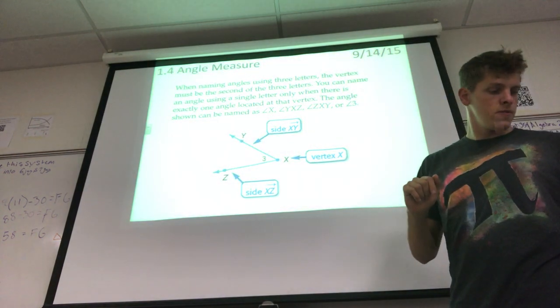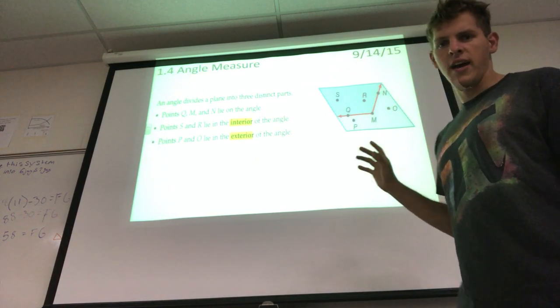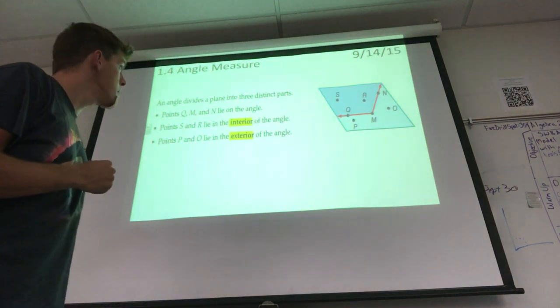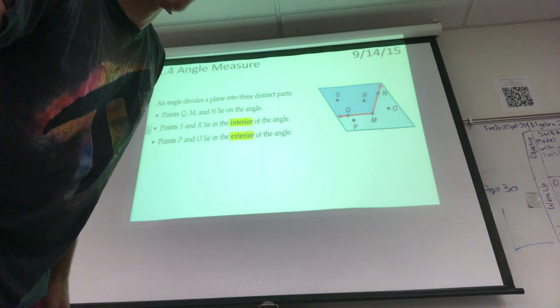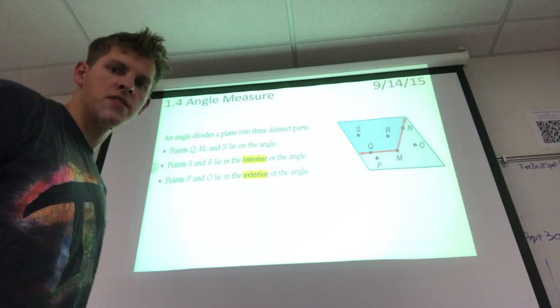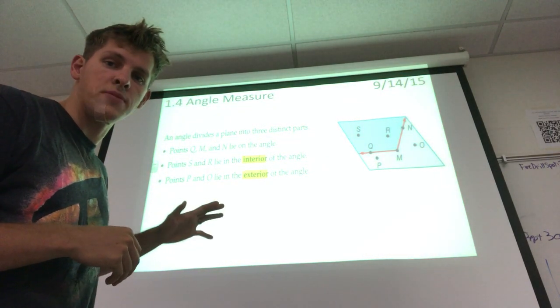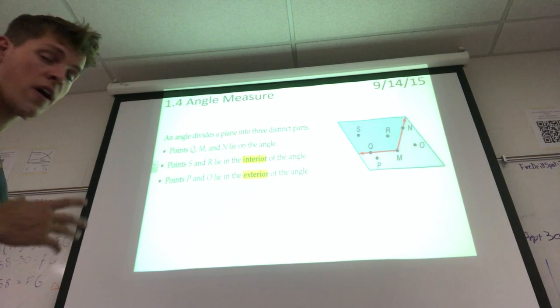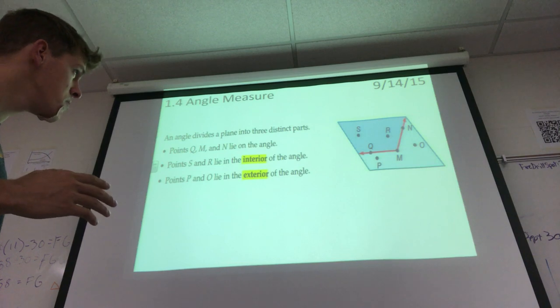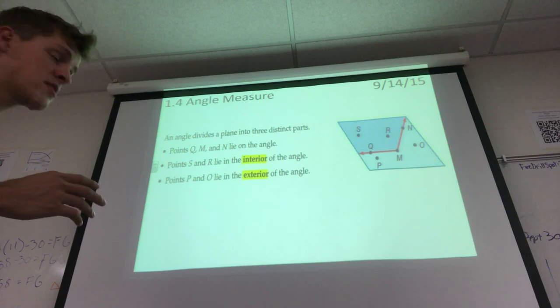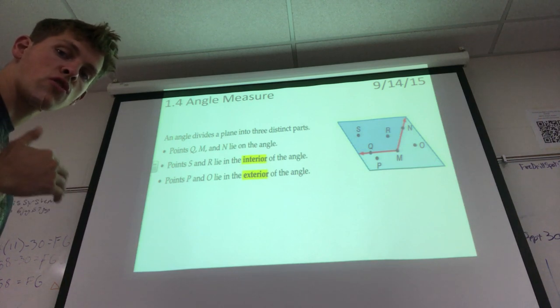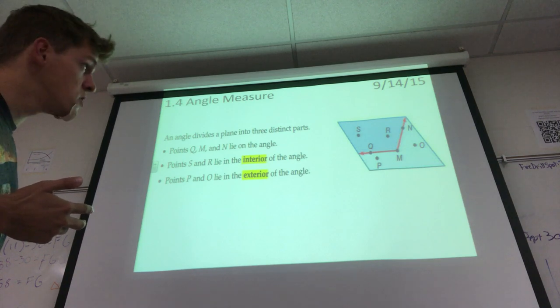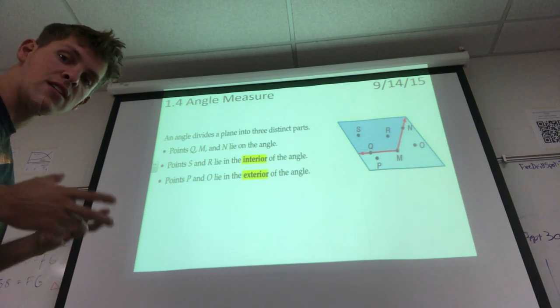This is another way to describe something. In that picture we see S and R are on the interior of that angle. We see P and O are on the exterior. It's rare that you'll be asked which is interior, which is exterior, but it's another way you could use to describe a point in terms of an angle.